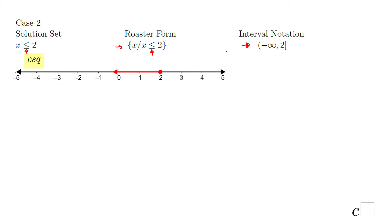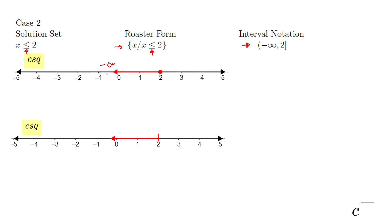This is the graphical approach: full dot at two, shade it to the left, towards negative infinity. The second way: instead of a full dot, bracket open to the left, towards the solution set. And that's it for case two.